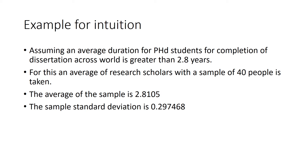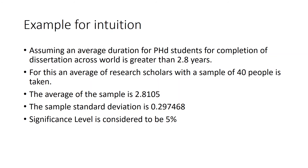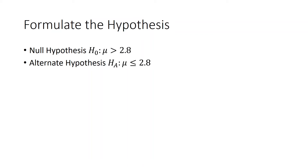The sample standard deviation is 0.297468. Since this is the sample standard deviation — not the population standard deviation — we don't use the z-statistic; we use the t-statistic. The significance level is 5%. So the null hypothesis is mu greater than 2.8 years, because the problem states the average is definitely greater than 2.8 years. The alternate hypothesis is mu less than or equal to 2.8.